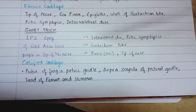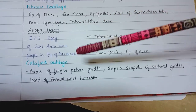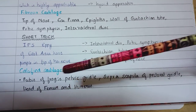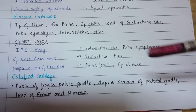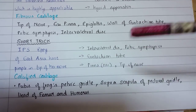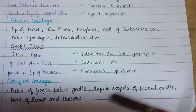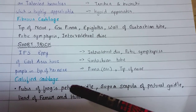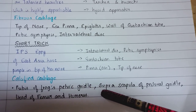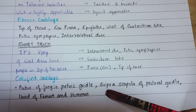Next is calcified cartilage, which is found in pubis of frogs, pelvic girdle, suprascapula of pectoral girdle, and head of femur and humerus. There is no short trick for this as only three locations are given.